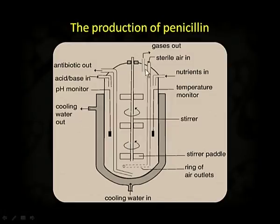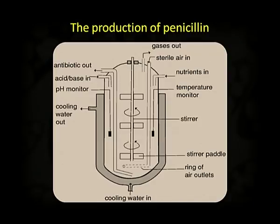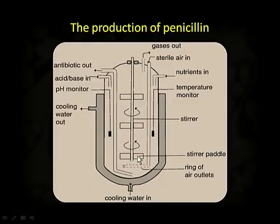There is a cooling panel for maintaining the temperature, as the microbe requires optimum temperature and optimum pH. Monitoring of pH and temperature is very important. As you can see here, this is the temperature monitor and this is the pH monitor. The raw material and culture mix here in the fermenter. These are paddles that mix it, and some gases exit from here. The final product antibiotic comes out from the outlet. This is a fermenter — a method by which we can produce penicillin by fermentation process.